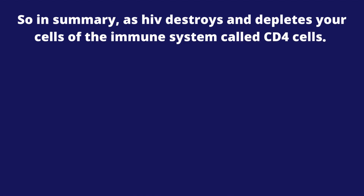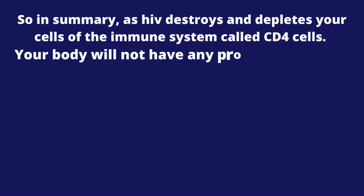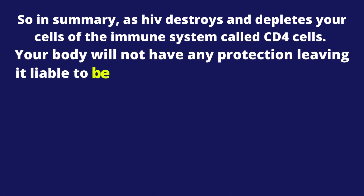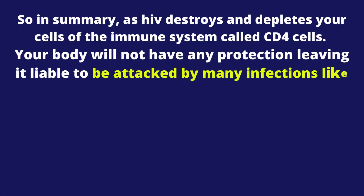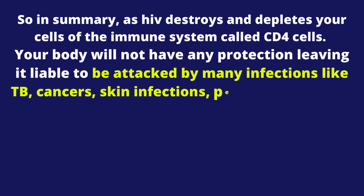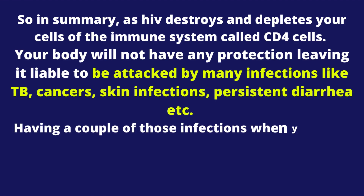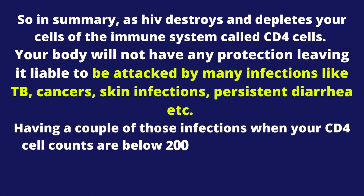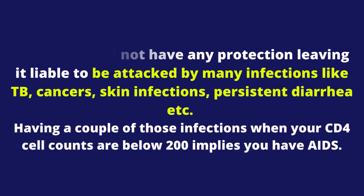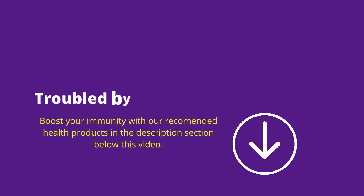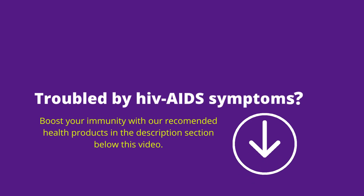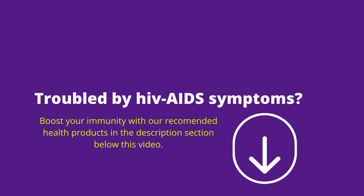So in summary, as HIV destroys and depletes your CD4 cells — the cells of your immune system — your body will not have any protection, leaving it liable to be attacked by many infections like TB, cancers, skin infections, persistent diarrhea, and others. Having a couple of those infections when your CD4 cell counts are below 200 implies you have AIDS. Hopefully the question, how does HIV cause AIDS, is now answered.